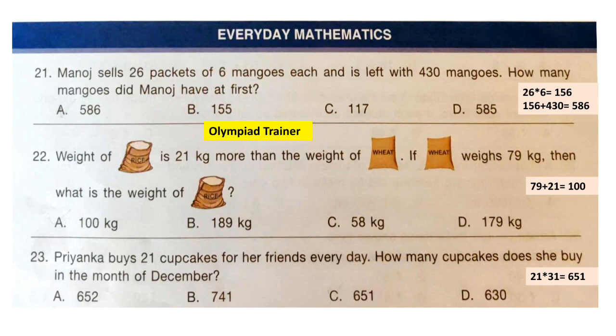Question 22: The weight of rice is 21 kg more than the weight of wheat. If wheat weighs 79 kg, then what is the weight of rice? The weight of wheat is 79 kg, and rice weighs 21 kg more than wheat, so we add 79 and 21. The correct answer is option A: 100 kg.